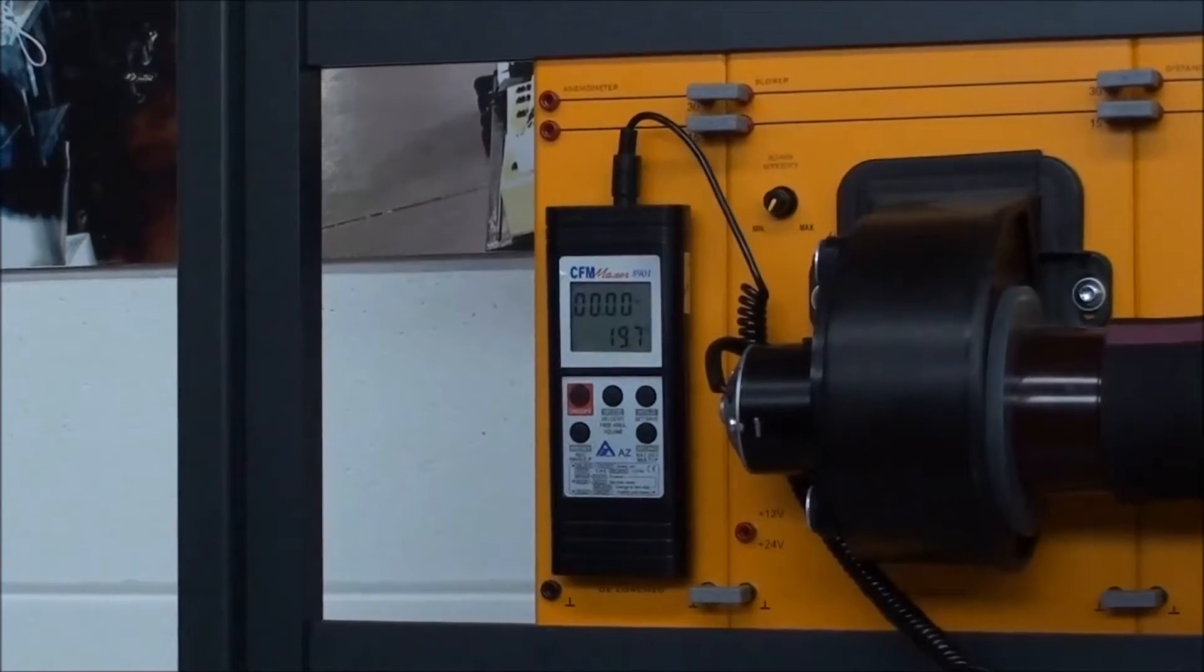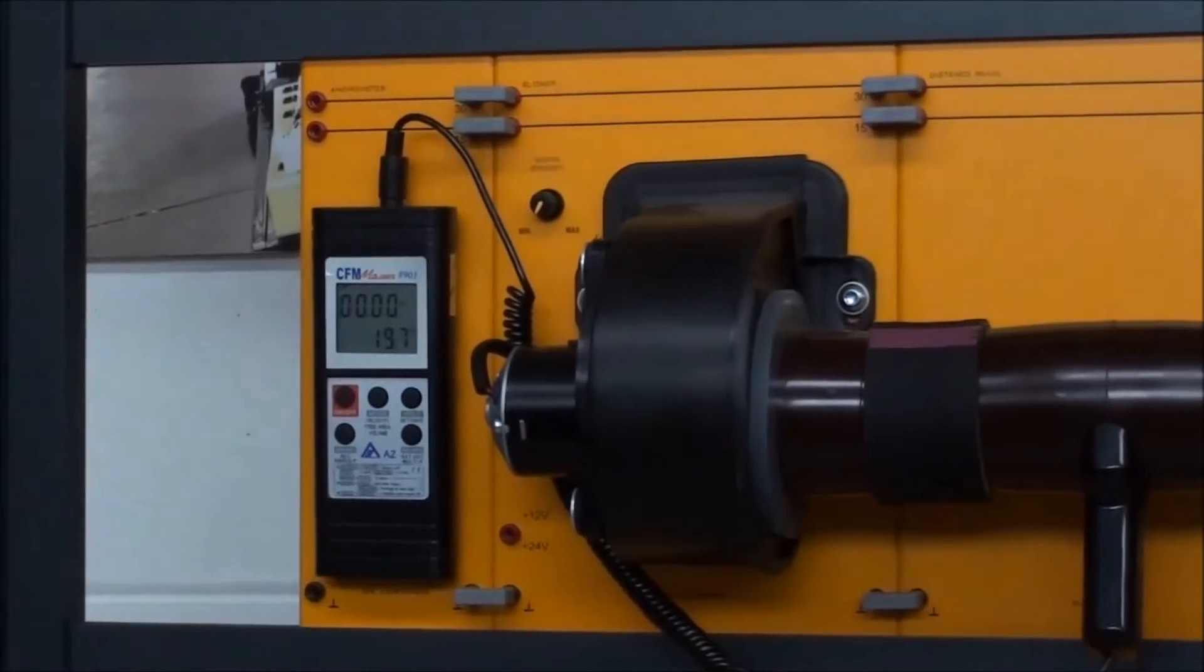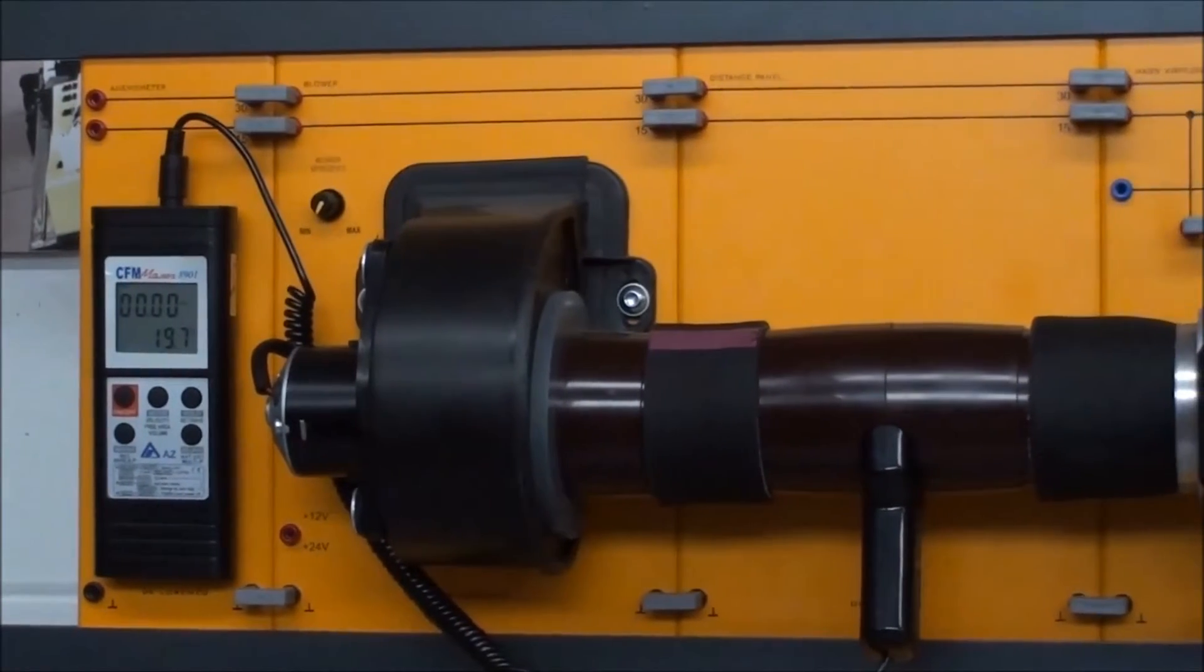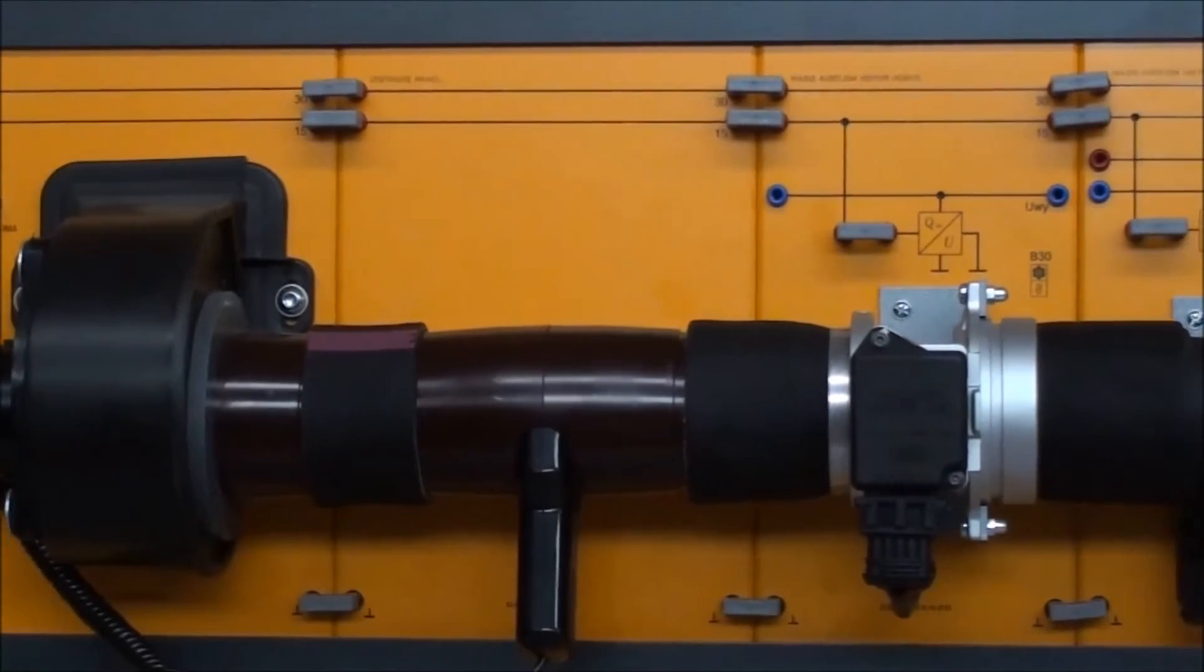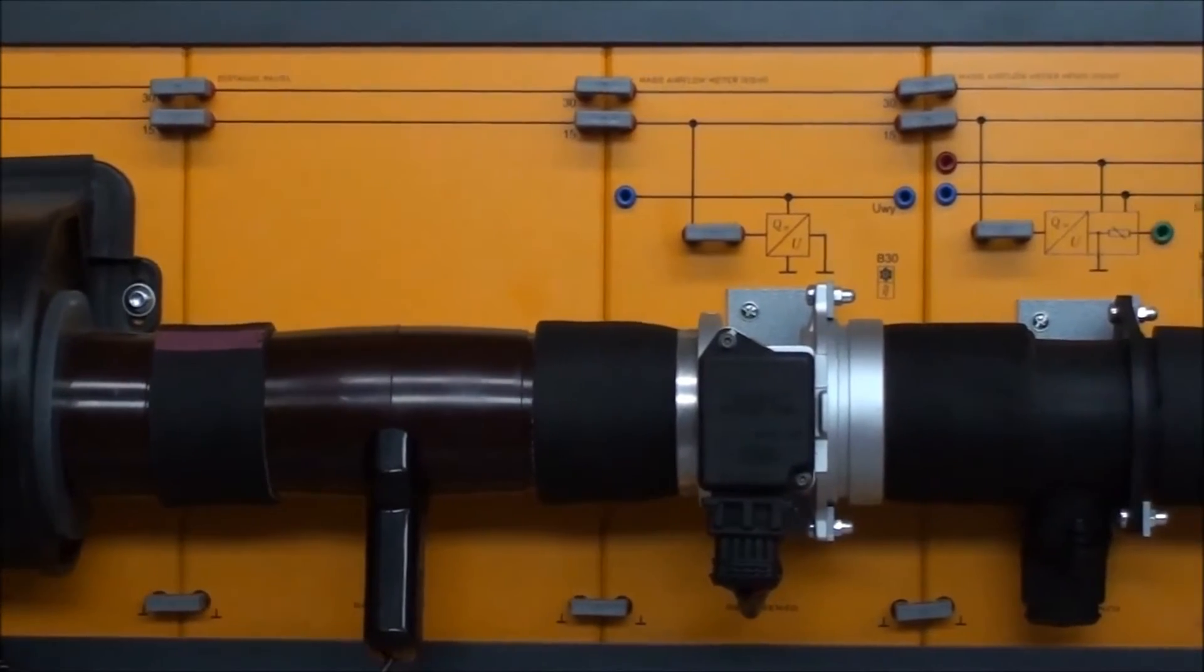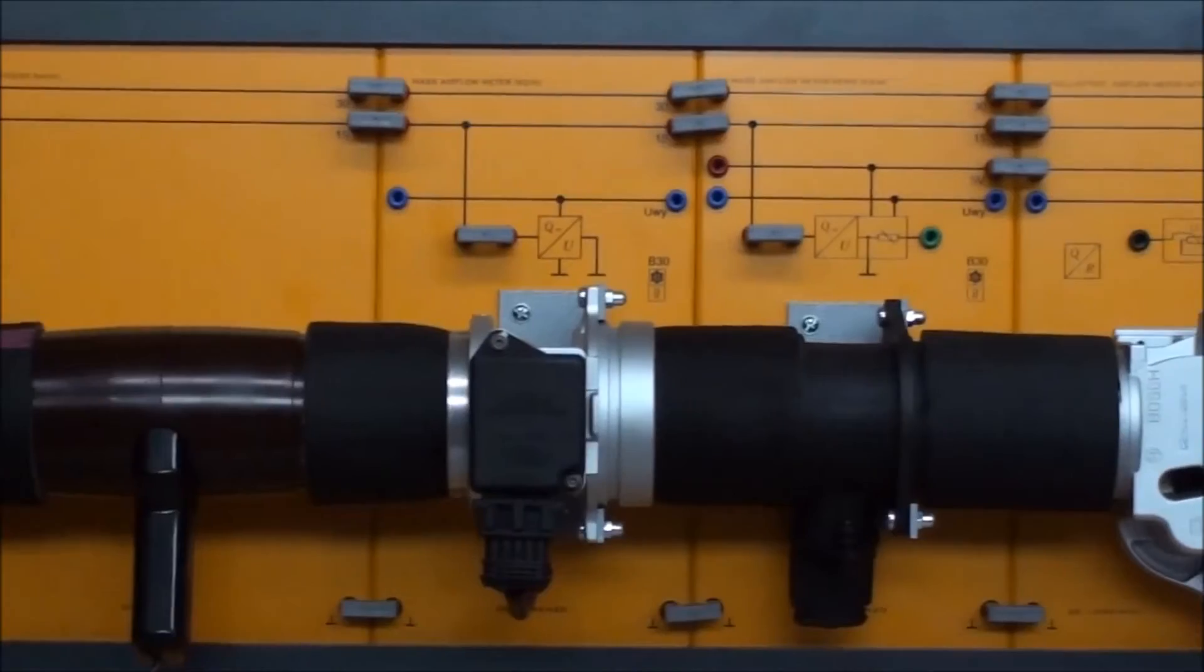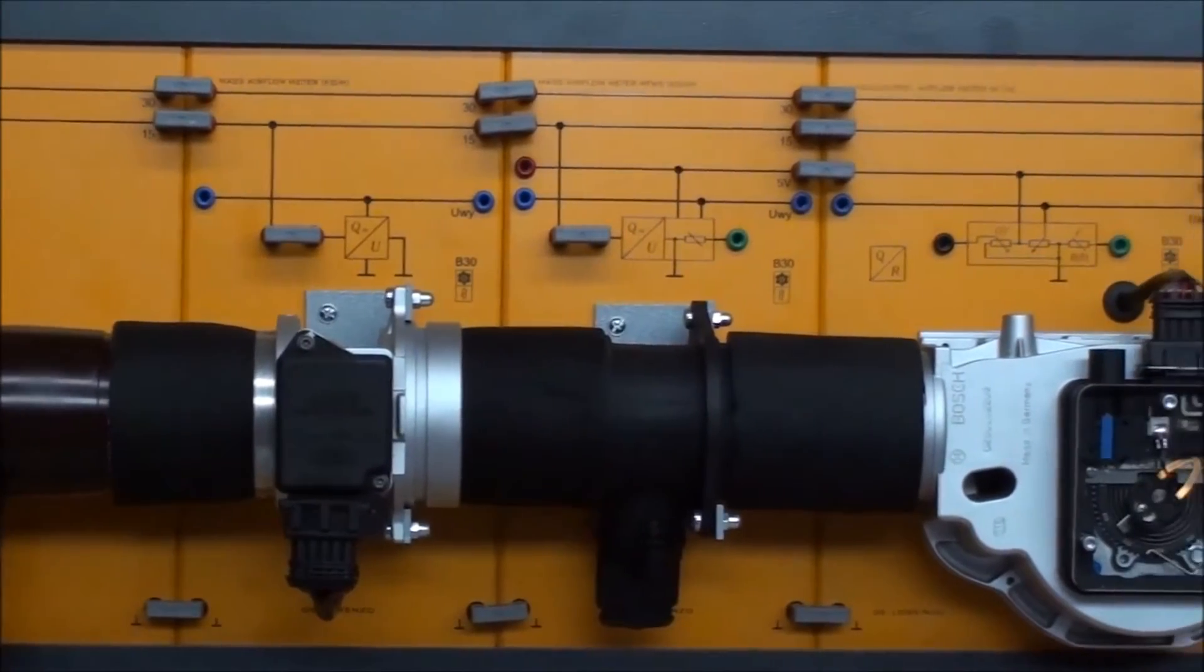Here are the components in the middle row: the anemometer, the blower, the mass air flow meter, the volumetric air flow meter, the voltage regulator, and the rotation direction sensor.